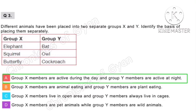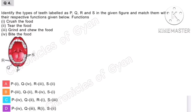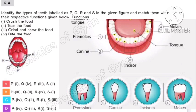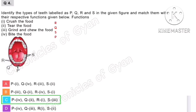Question 4. Identify the types of teeth labeled as P, Q, R and S in the given figure and match them with their respective functions. R is premolars, used for crushing food. Number 2: tear the food — that is canines, which is Q. Number 3: grind and chew the food — that is S, the molars. Number 4: bite the food — that is P, the incisors. Correct answer is option C.